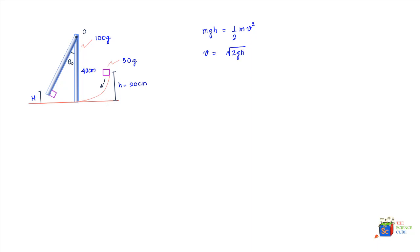If angular momentum is conserved, then the angular momentum of the block before it hits should equal the angular momentum of the rod-block system after the collision. The angular momentum of the block just before it hits the rod is given as m·v·d, where d is the length of the rod (40 cm), measured about the axis of rotation O.